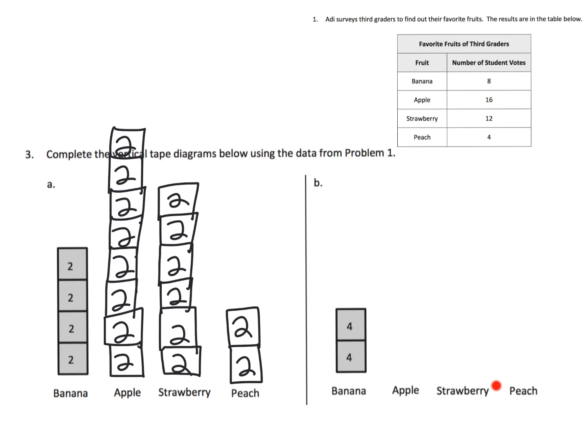Now here, it's the exact same problem, only now the units are 4. So when you have 8 students with banana, that's going to be 4 plus 4 is banana. 4 plus 4 is 8, which is the bananas. Now we have 16 students who liked apples. So that's going to be 4, 8, 12, 16. So there's our apples.